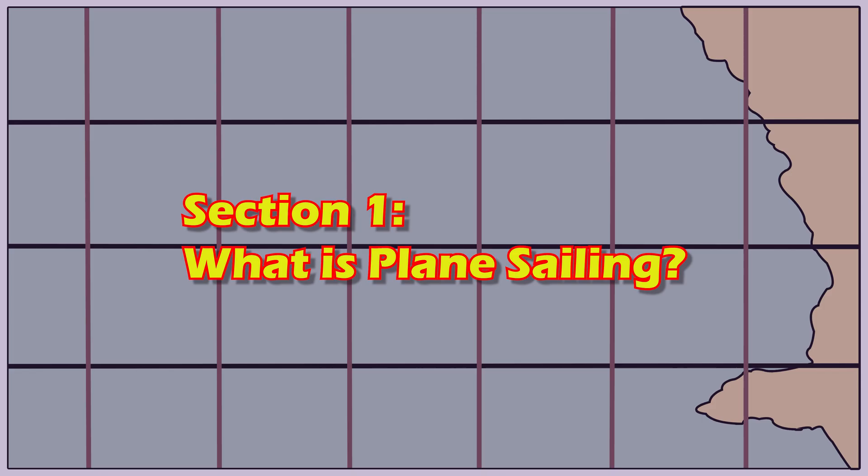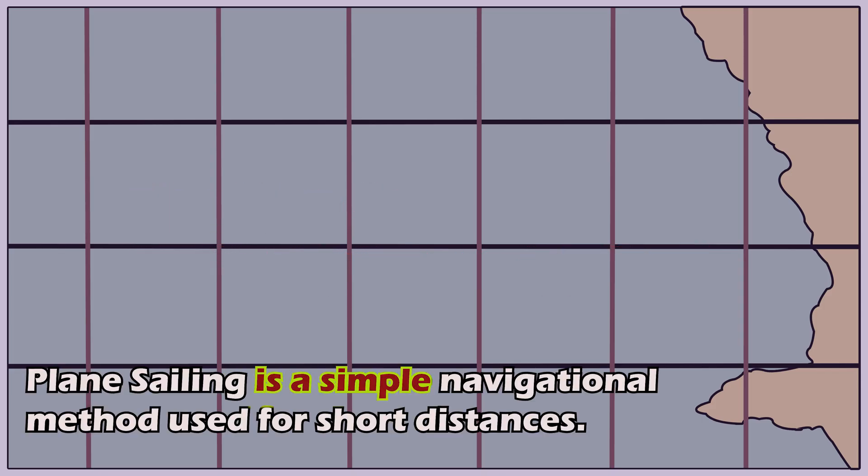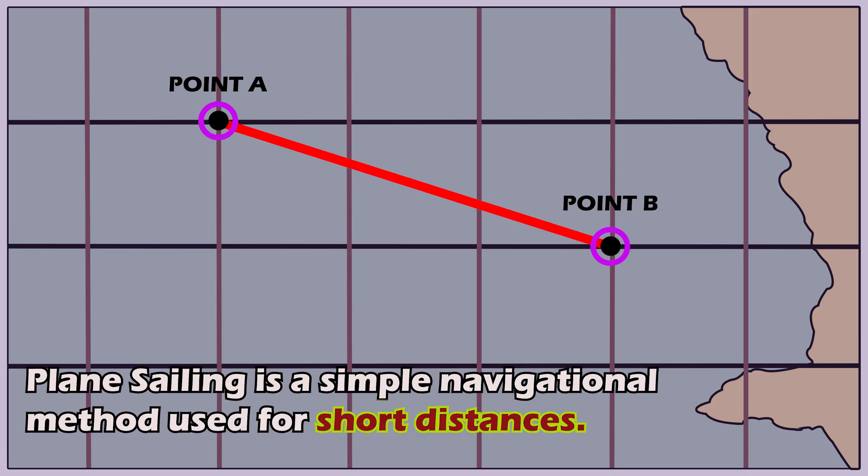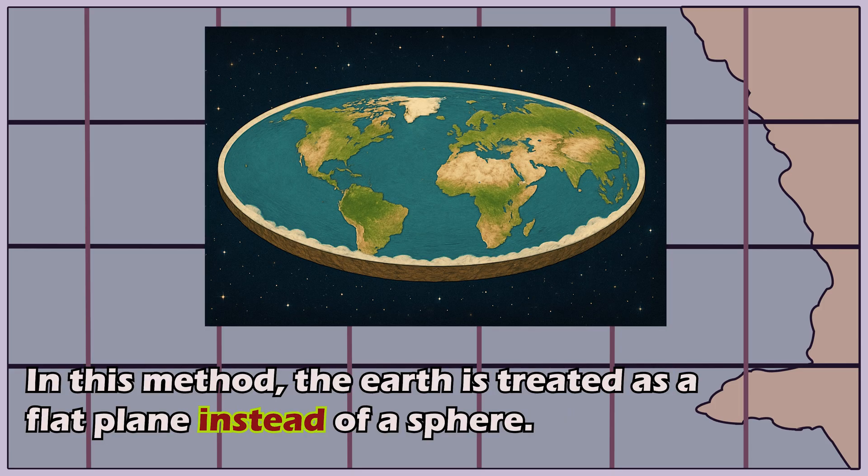Section 1. What is plane sailing? Plane sailing is a simple navigational method used for short distances. In this method, the Earth is treated as a flat plane instead of a sphere.